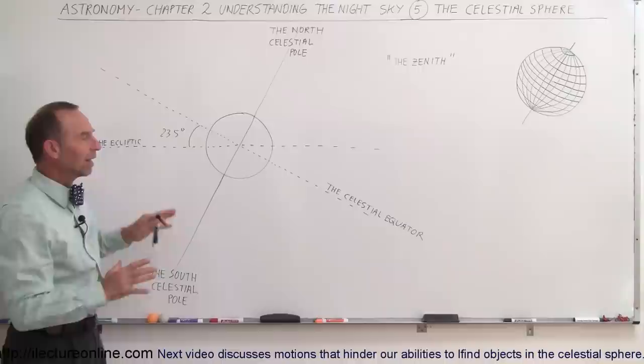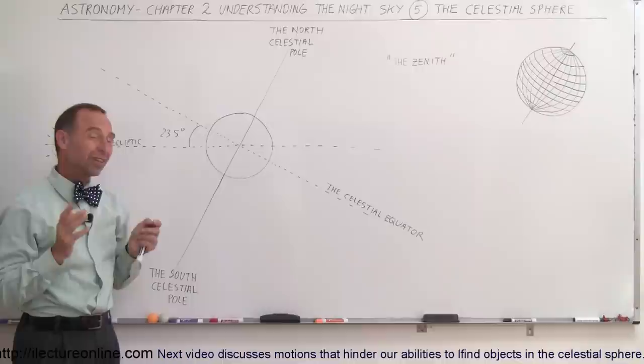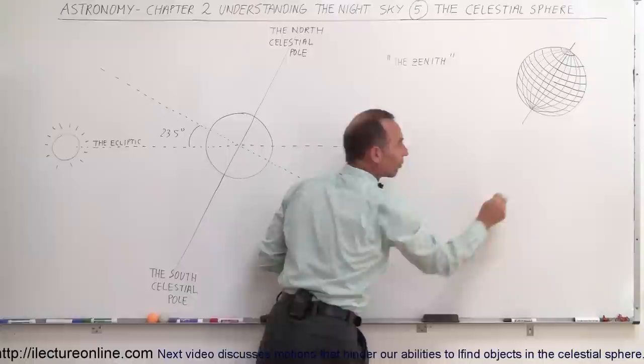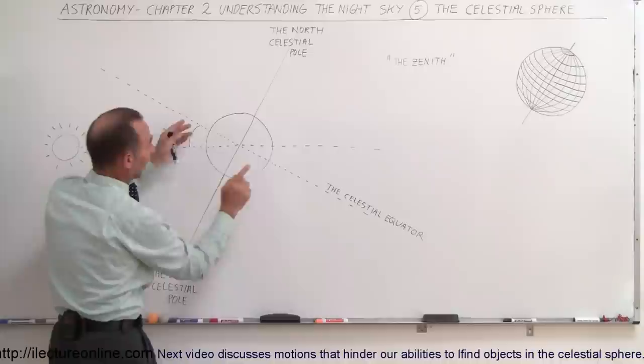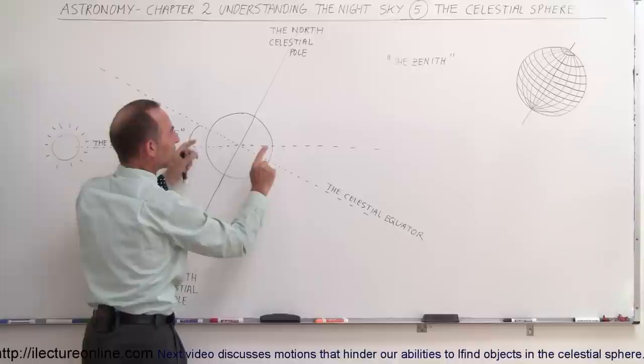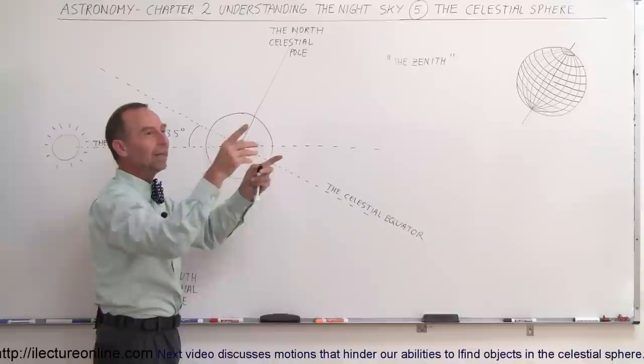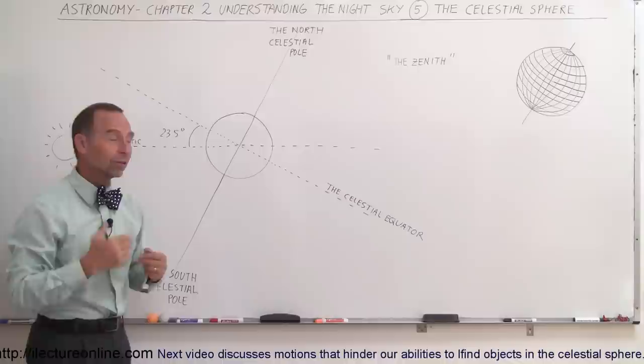Now we have a coordinate system in line with the orientation of the Earth, which defines the coordinate system of the entire universe. We still have to figure out how to find things in the universe — like a star over here or a constellation over there. Because as the Earth continues to spin and revolves around the sun, it makes it difficult to say exactly where something is, since from day to day and month to month, things are in different locations in the sky relative to the time of day or night.